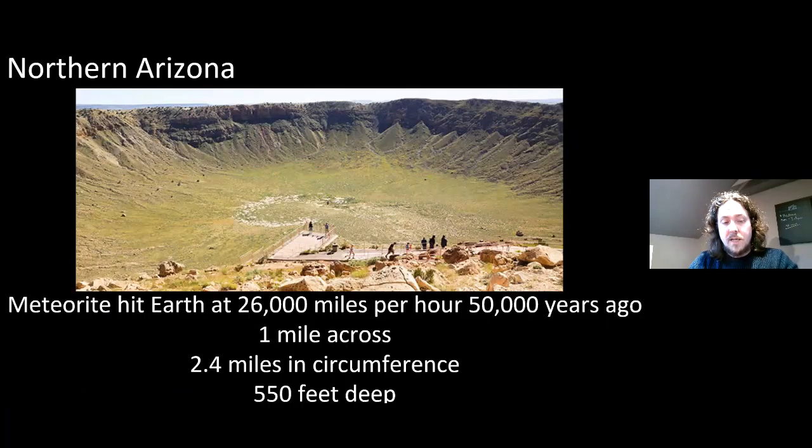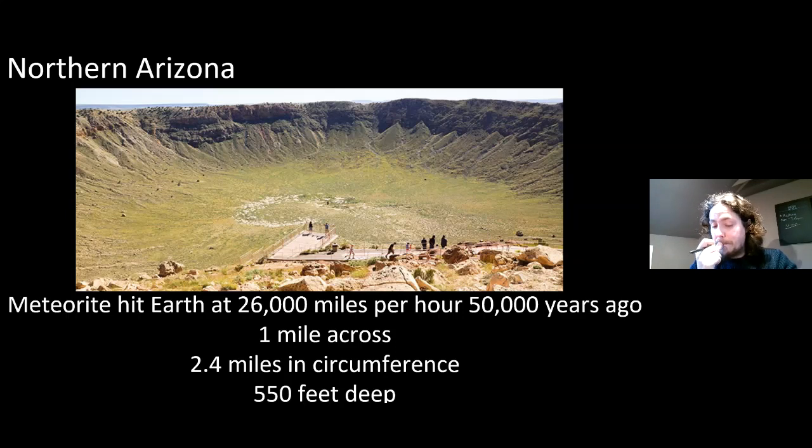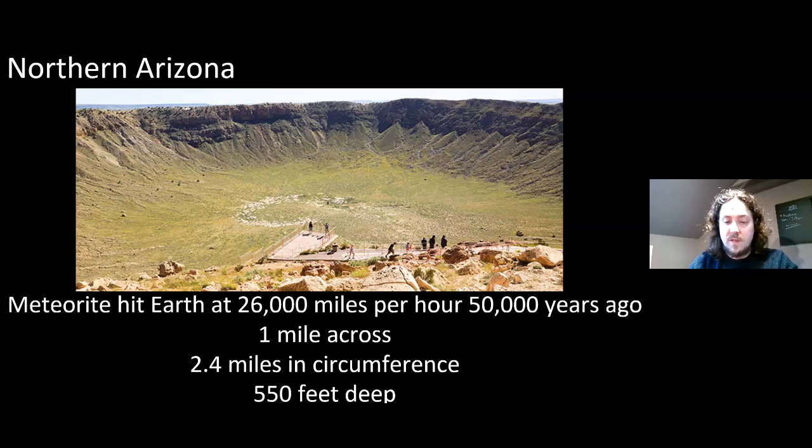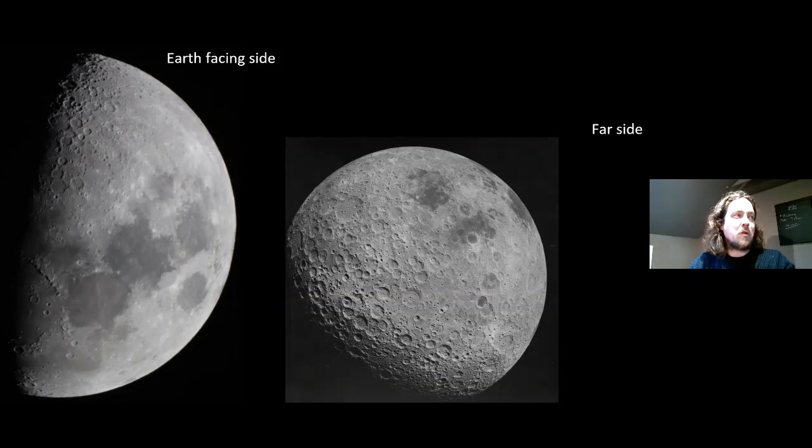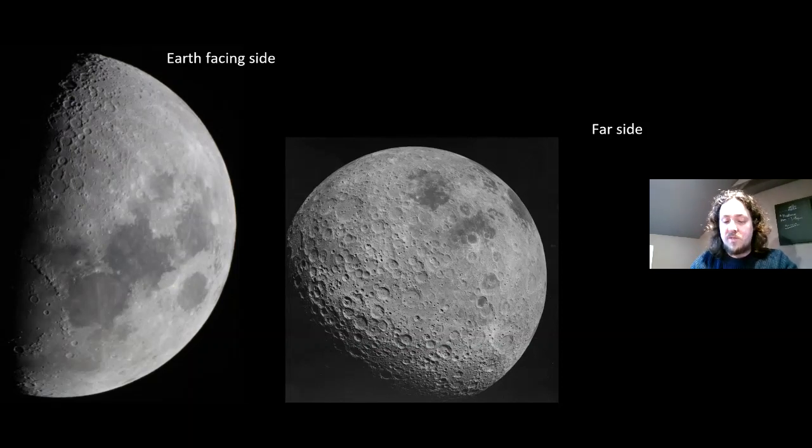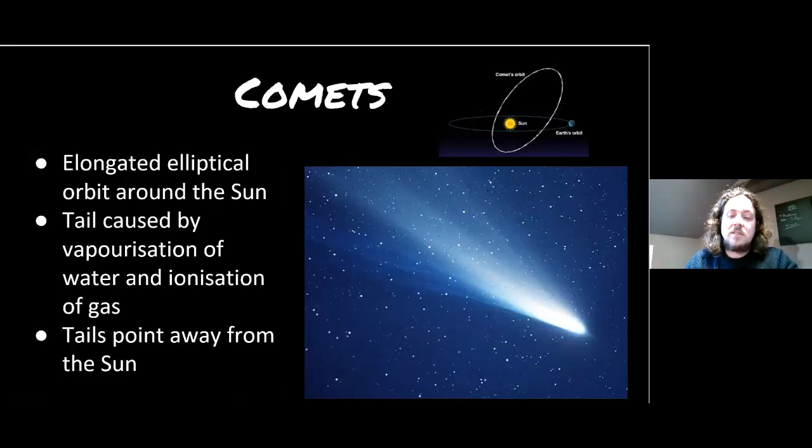Meteors can come in all kinds of shapes and sizes because asteroids can come in all kinds of shapes and sizes. Here is an example of a meteorite crater in northern Arizona, America. Suffice to say that were you to observe that event 50,000 years ago, it would have been quite an epic sight. The moon has taken a lot of hits for the team.